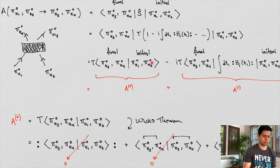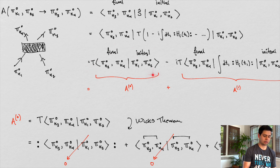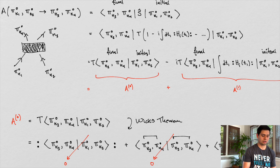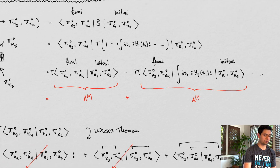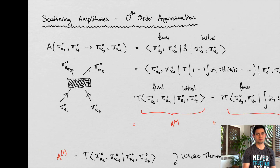So we've calculated a term associated with this zeroth order approximation. In the next video, we're going to focus on A1 and calculate that term, and then we're going to move on to Feynman diagrams. That's all for this video — if you guys like this kind of content, make sure to hit that like and subscribe button. See you guys in the next one.